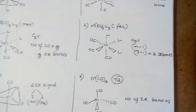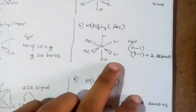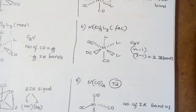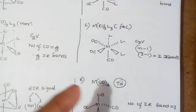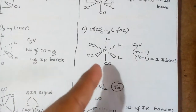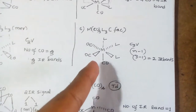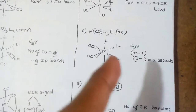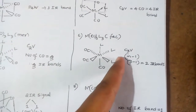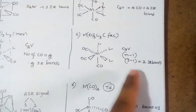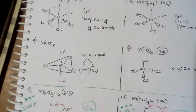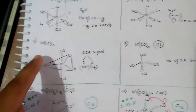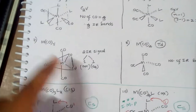For MCO3L3 facial — I have discussed this in the starting of this video. It's a C3V complex. Three carbonyl groups are there. Three minus one gives two IR bands.